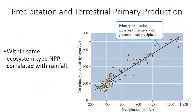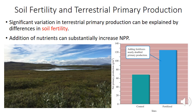When comparing NPP within the same ecosystem type, we can use precipitation or rainfall as a predictor. A plot of many ecosystems with precipitation in millimeters per year against NPP shows an almost perfect correlation, though there is some variation in NPP at any given precipitation level. The factor driving that variation is usually availability of soil nutrients.